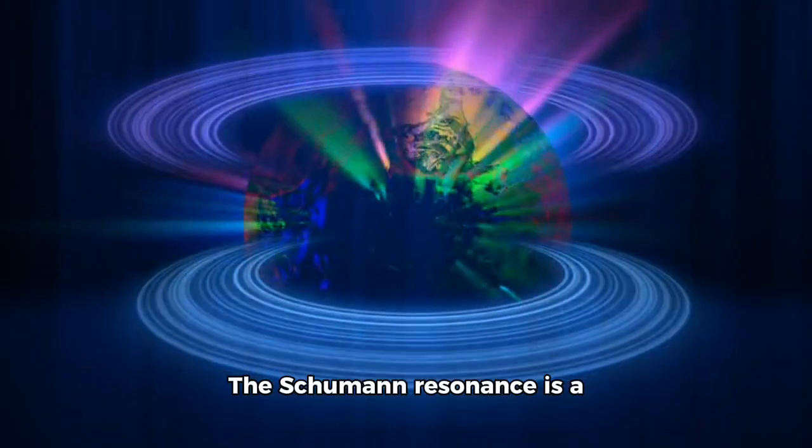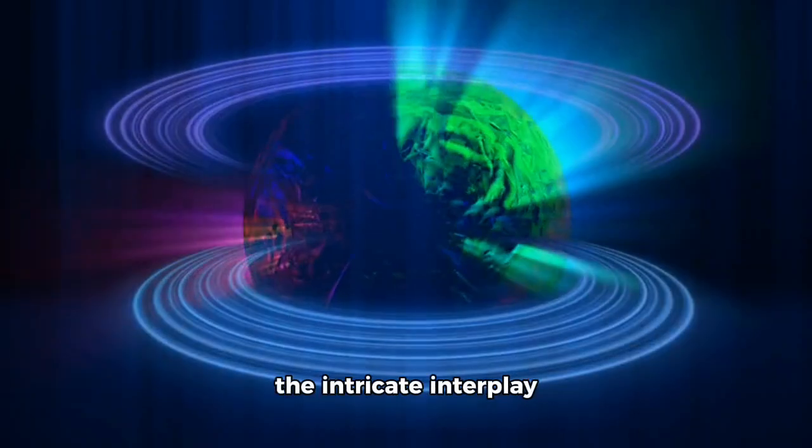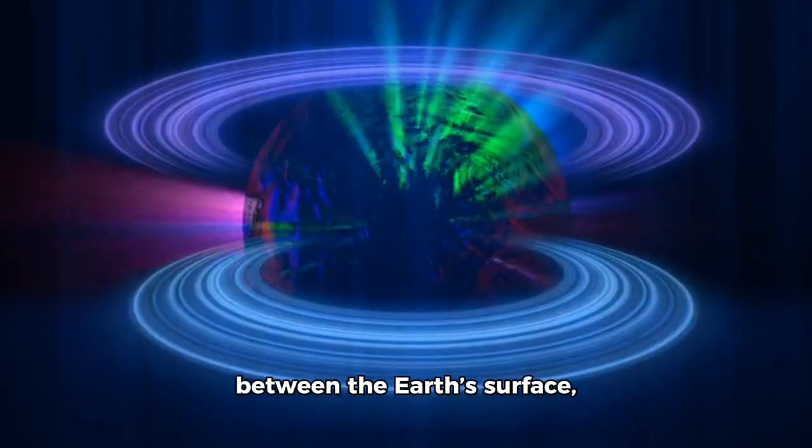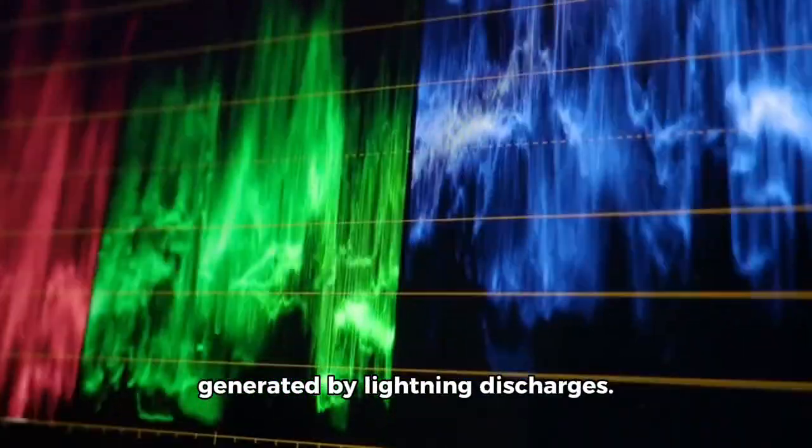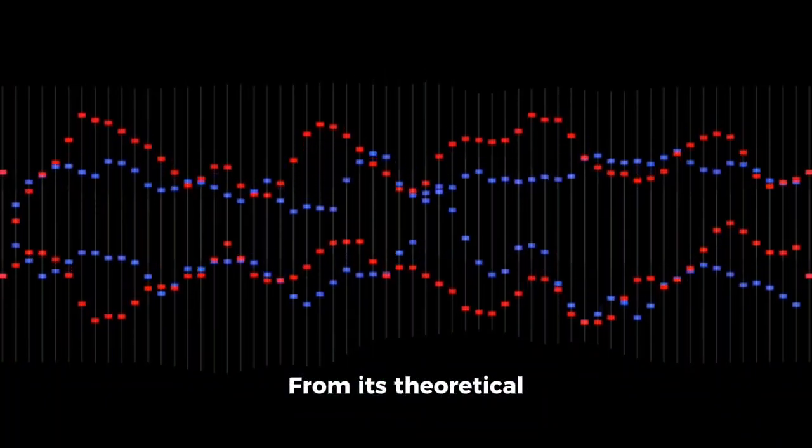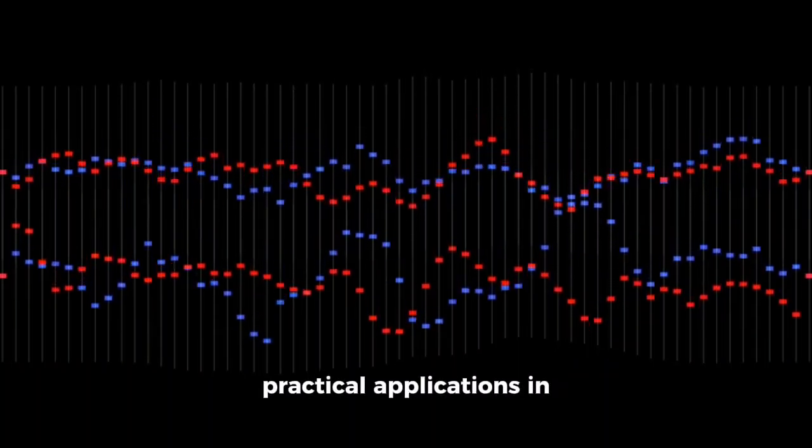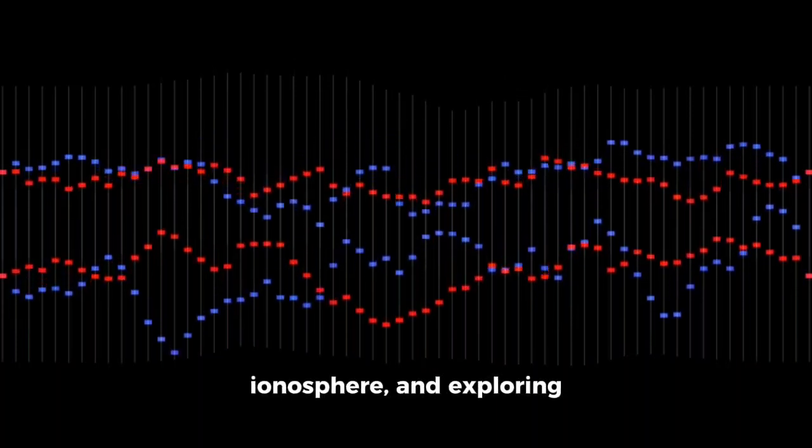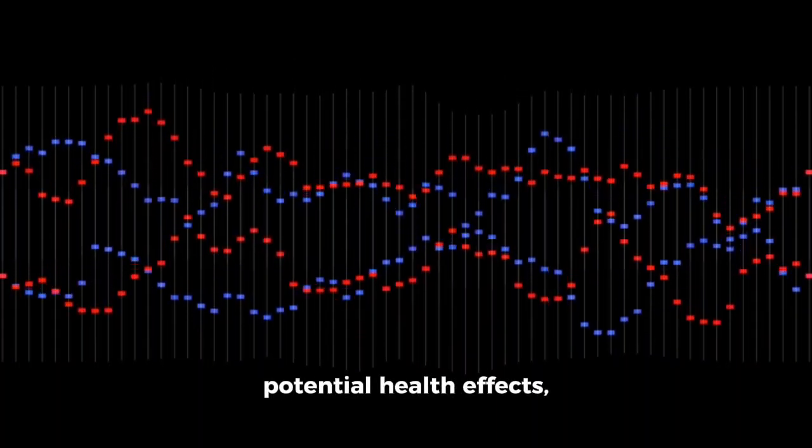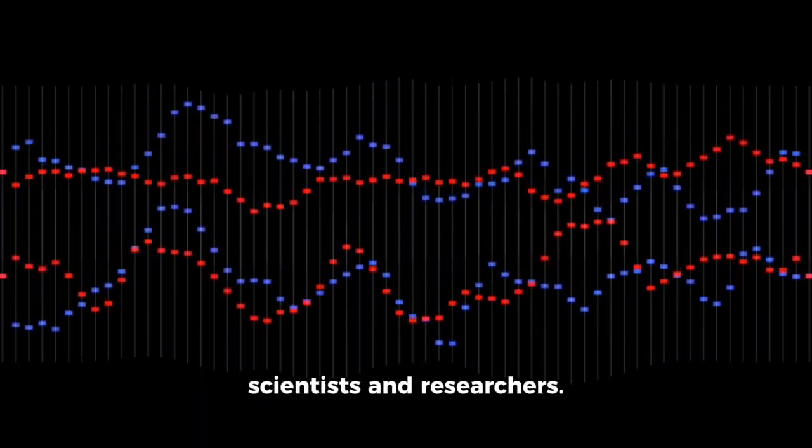The Schumann resonance is a remarkable natural phenomenon that highlights the intricate interplay between the Earth's surface, its ionosphere, and the electromagnetic waves generated by lightning discharges. From its theoretical prediction by Winfried Otto Schumann to its practical applications in tracking lightning activity, studying the ionosphere, and exploring potential health effects, the Schumann resonance continues to captivate scientists and researchers.